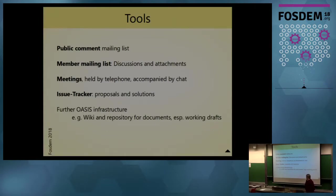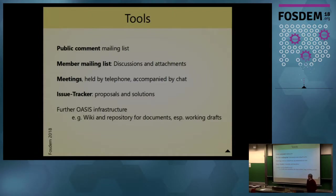Regular meetings are held by telephone. Currently the TC meets on Mondays starting at 17:00 UTC for one hour — that is 6 o'clock in the evening for members in Germany and 9 o'clock for members in California. OASIS provides a Jira issue tracker, but unfortunately its global settings limit formatting features and attachments. We work around this shortcoming by using mailing list attachments or the wiki, and uploading documents to the repository.